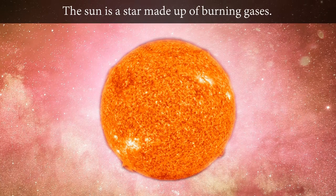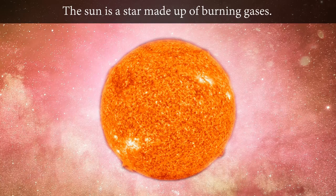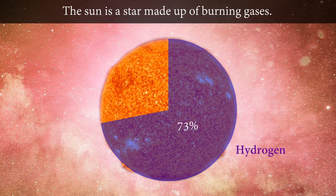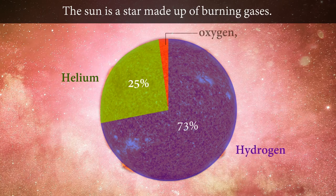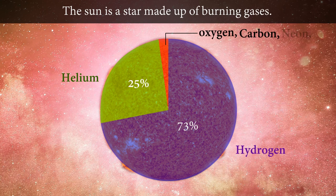The sun is a star made up of burning gases. The sun's mass consists of 73% hydrogen, 25% helium, and smaller amounts of oxygen, carbon, neon, nitrogen, and other elements.